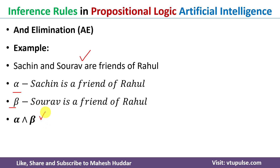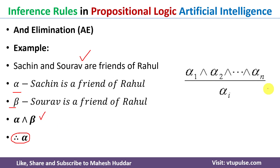If this statement alpha and beta is true, then both components must be true. So we can eliminate the 'and' and use each primitive individually. The conclusion can be alpha or beta depending on the requirement. In general, from alpha-1 and alpha-2 and ... and alpha-n, we can use any individual alpha-i.